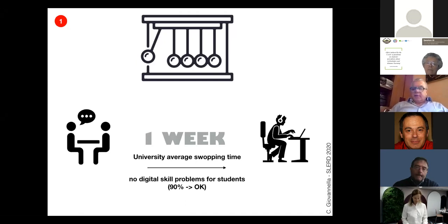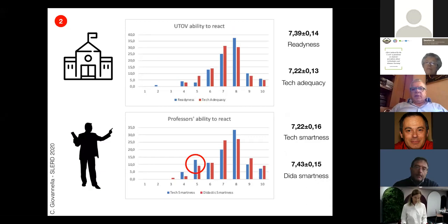Here you have some data about the ability to react and the perception of the ability to react by the institution and by the teacher. The readiness and also the effectiveness of the technological environment that was provided by the institution were given very satisfactory by the students. Students were also satisfied about the ability of professors to react. Of course, a small amount of them had some problem, but it is really a minority. Apparently the students thought that the ability to react, the didactic ability to react, the promptness to react, was a little bit higher than the technological one.